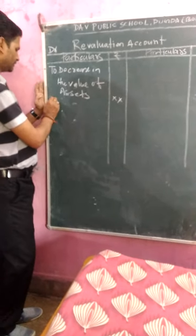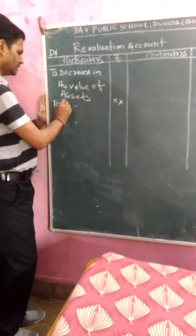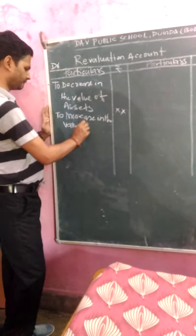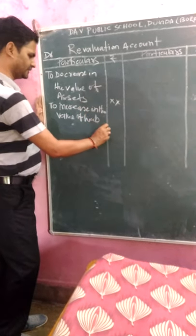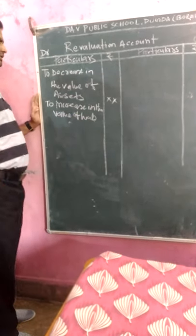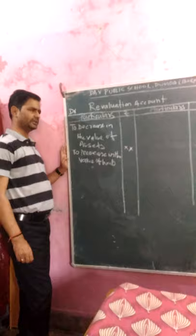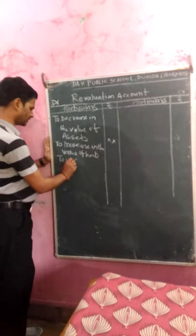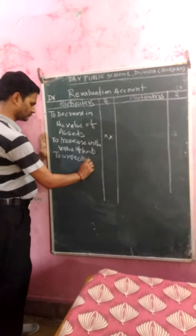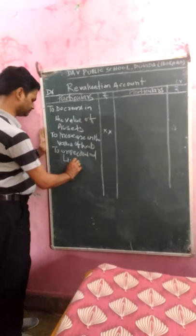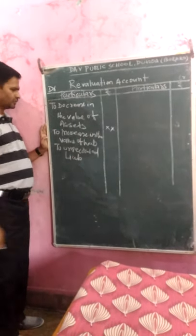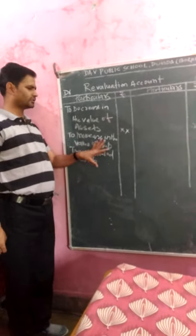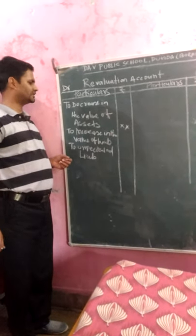Decrease in the value of assets goes on the Debit side. Next, increase in the value of liability — when the value of a liability increases, that is a loss for the firm, so we write it in the Debit side. Also, unrecorded liability is also a loss for the firm. The liability which is present in the business but not recorded in the balance sheet is called an unrecorded liability.